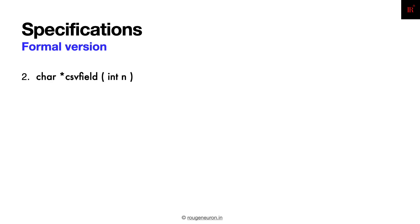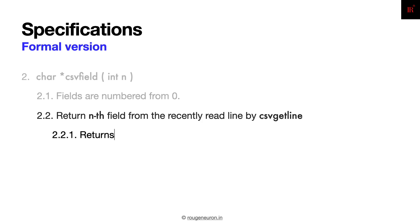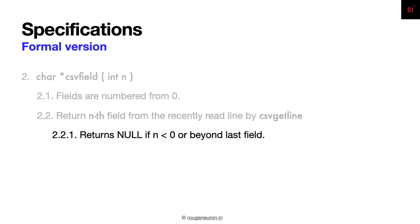Let's look at the specifications for the csv_field function. To align with normal language-specified containers, fields should be numbered from zero. The nth field from the recently read line by csv_get_line needs to be returned, and as a corollary, return null if the input provided by the user is negative or beyond the last field of the data.